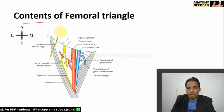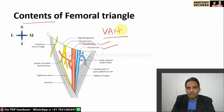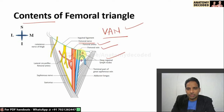The contents of the femoral triangle from medial to lateral can be remembered by the mnemonic: vein, artery, nerve. The medial-most structure is the femoral vein, then the femoral artery, and the lateral-most is the femoral nerve. There is also the femoral branch of the genitofemoral nerve and the deep inguinal lymph nodes. The femoral vein and femoral artery are covered in a sheath called the femoral sheath.